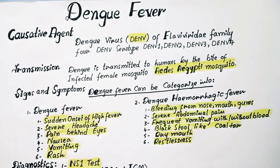Welcome to the YouTube channel 'Learn Science with Me'. This video is on dengue fever. Dengue is a mosquito-borne viral infection found in tropical and subtropical climates worldwide. It is mostly found in urban and semi-urban areas.